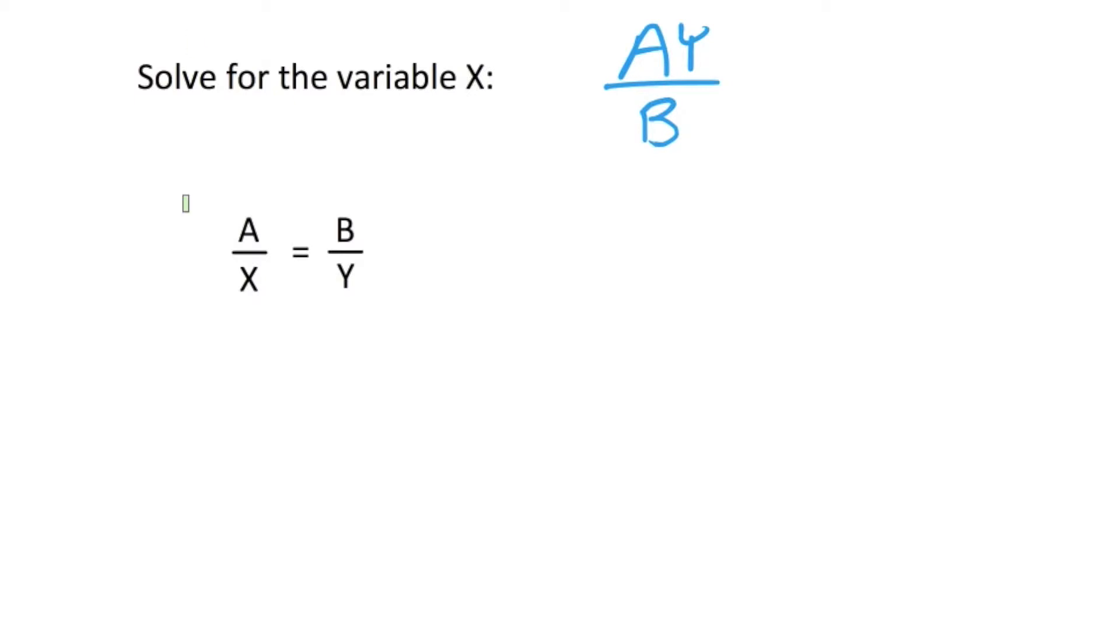What we want to do in this problem is get x all by itself, right? So I don't want x to be part of a fraction, so let's multiply both sides of the equation by x. So we end up with x and x, right?